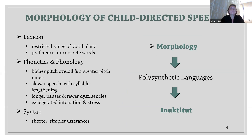When it comes to lexicon, child-directed speech is characterized by a restricted range of vocabulary and preference for concrete words. With regard to phonetics and phonology, child-directed speech is usually described as having higher pitch overall and a greater pitch range, slower speech with syllable lengthening, longer pauses and fewer disfluencies, and also exaggerated intonation and stress. As to syntax, when compared to adult-directed speech, it tends to have shorter, simpler utterances. When it comes to morphology, however, there is still a distinct shortage of literature, and in this regard, polysynthetic languages constitute a great source for investigation.